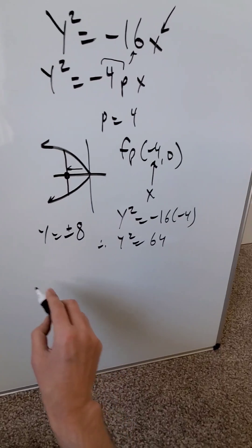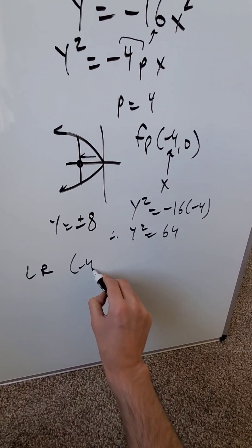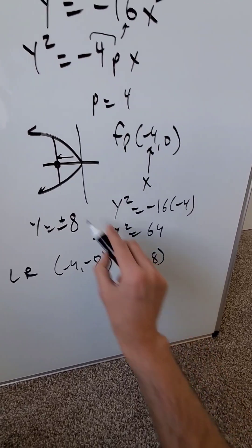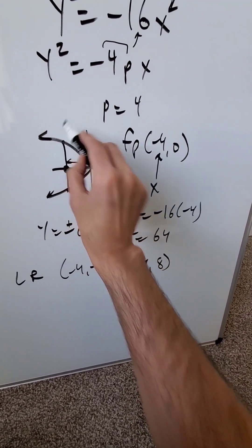You have everything you need for your latus rectum endpoints. It would be minus 4 comma minus 8 and minus 4 comma positive 8. Here's your one endpoint, here's your other endpoint.